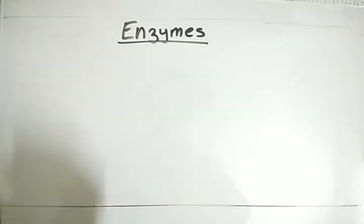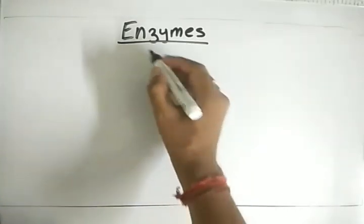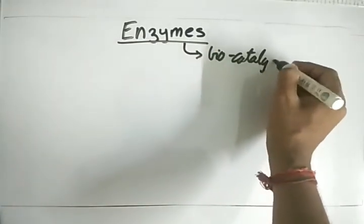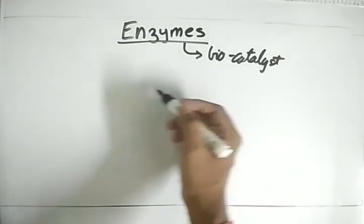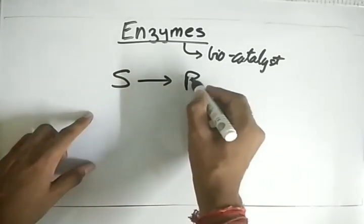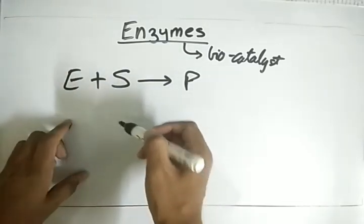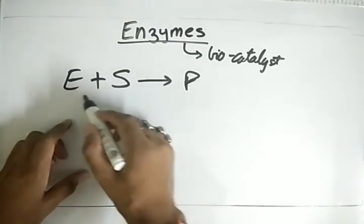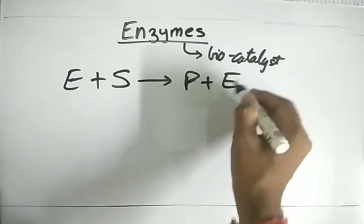Welcome back to the YouTube channel 'The Concept Guy'. Today we will discuss enzymes. Enzymes are biocatalysts that alter the rate of a reaction where a substrate tends to give a product. If we add an enzyme, the reaction increases and becomes faster. The enzyme is not consumed in the reaction, so we get it back at the outlet as well.